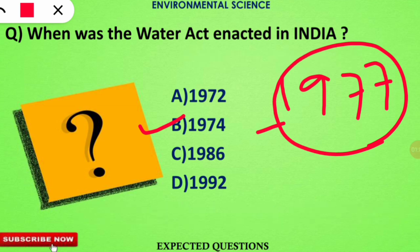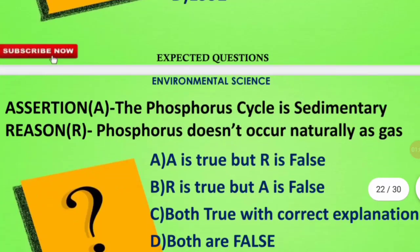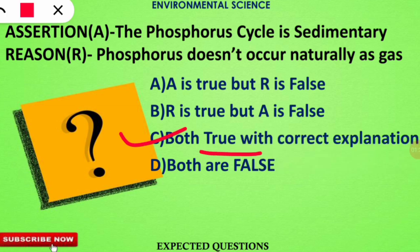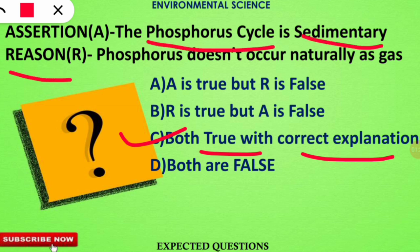The next question is an assertion-reasoning type. The assertion states that the phosphorus cycle is sedimentary in nature, and the reason given is that phosphorus doesn't occur naturally as a gas. The correct option is C — both statements are true, and the reason correctly explains the assertion. The phosphorus cycle is sedimentary because phosphorus is found in sediments, phosphate forms, rocks, and guano — not in a gaseous phase.